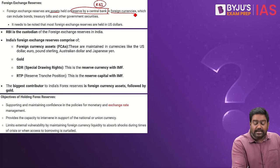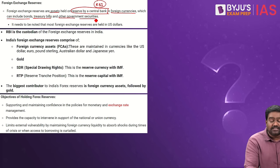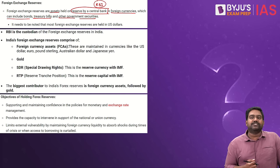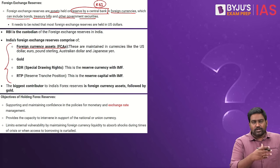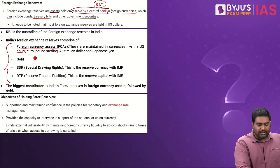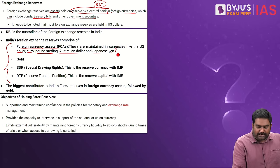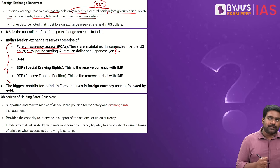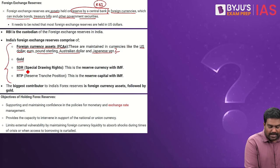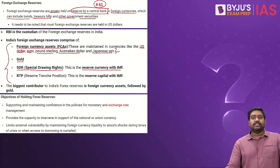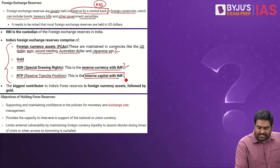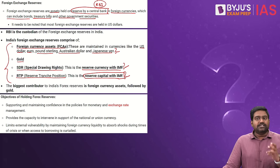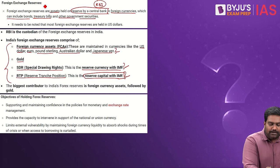Forex reserves could also include bonds, treasury bills or T-bills, government securities or GSECs, etc. They are comprised of foreign currency assets including major reserve currencies like the US dollar, the euro, pound sterling, the Australian dollar, Japanese yen, etc. They could also include gold assets maintained by the RBI, the Special Drawing Rights or SDR — the reserve currency with the IMF — and the reserve tranche position, which is the reserve capital that the RBI maintains with the IMF. A basket of these assets maintained by the RBI constitutes the foreign exchange reserves of the country.